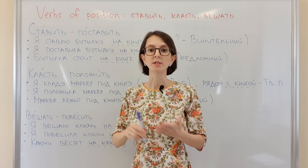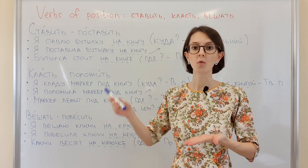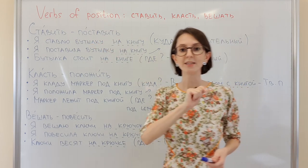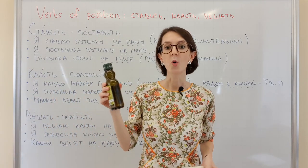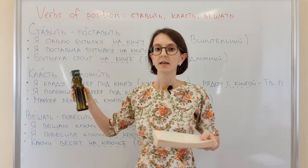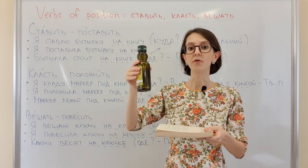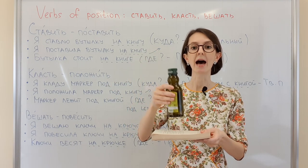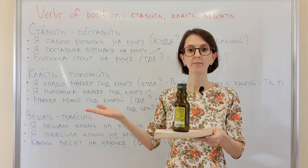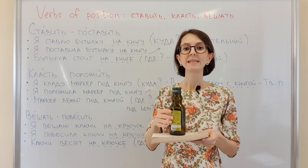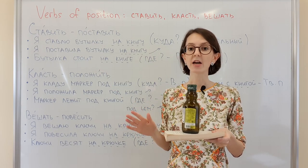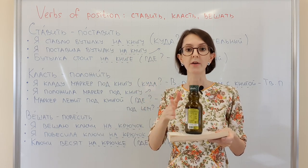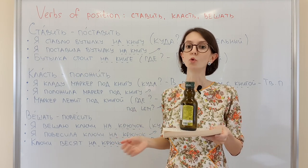Ставить means to put something vertically — this is an action verb. For example: я ставлю бутылку на книгу. This is a bottle, это бутылка; это книга. Я ставлю бутылку на книгу. Я поставила бутылку на книгу — the action is completed. We used past tense and the SV form because the action is completed and we have a result.